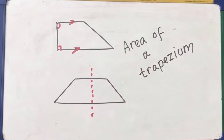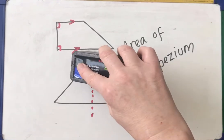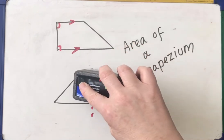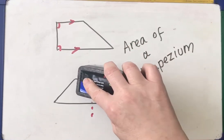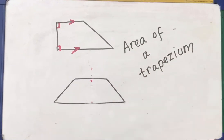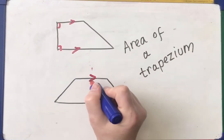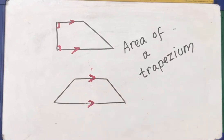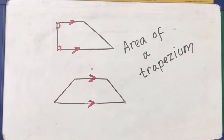The parallel sides are clearly the ones that are never going to meet. So the parallel sides are here. There are two ways you can look at calculating the area of a trapezium.